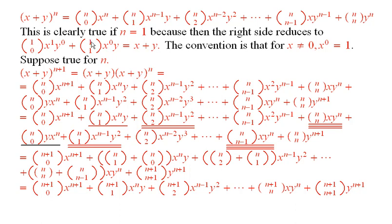And recall that something over 0 is 1, and something over itself is also 1. And so, this is just x plus y, because by convention, when x is not 0, x to the 0 is defined to be 1.